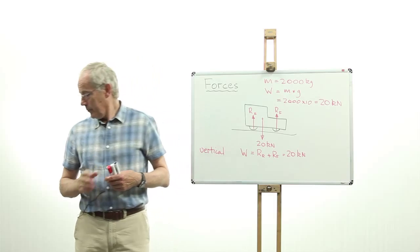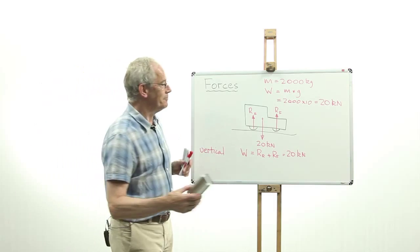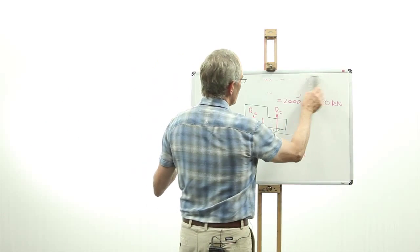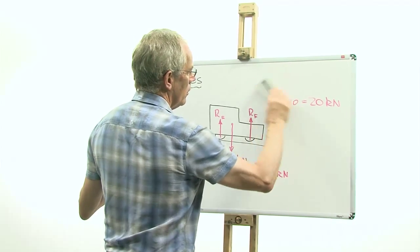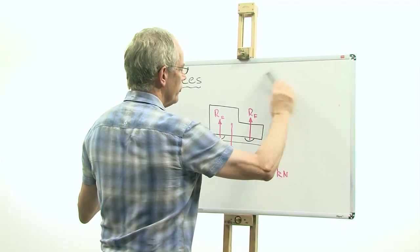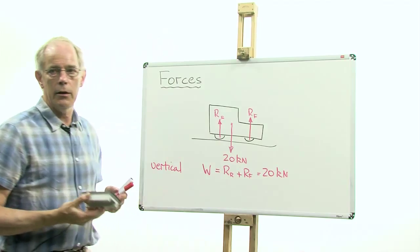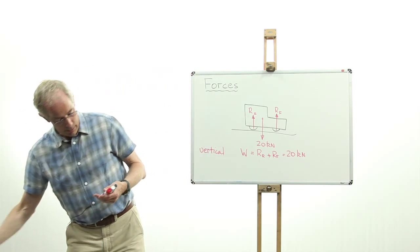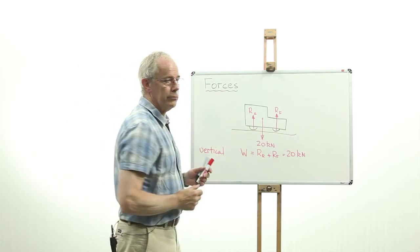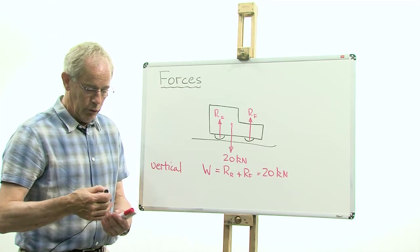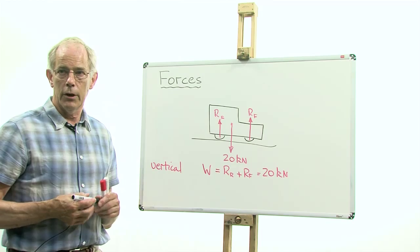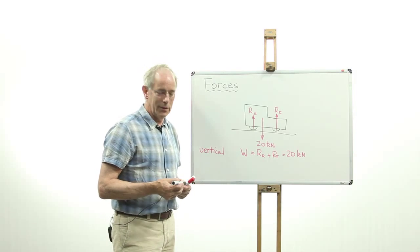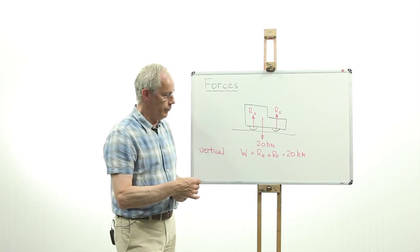What's happening in the horizontal direction? At the moment, nothing, because the vehicle is stationary, there's no force in the horizontal direction. The road is horizontal, so we can ignore any sideways forces. But what happens if we start the engine and the vehicle begins to move?